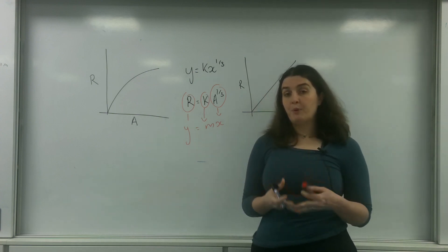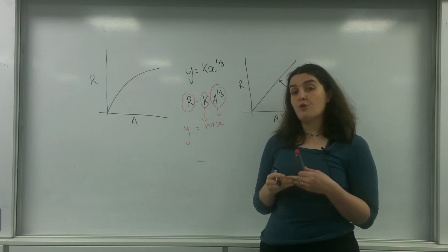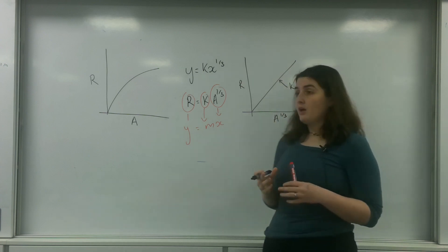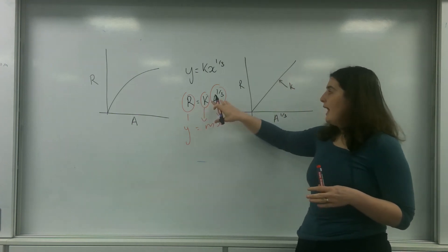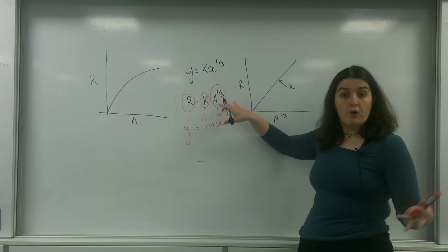Now this constant became important because what this constant represented was something quite important. If I had put into this formula here A equals one, so there was only one nucleon, either one proton or one neutron,